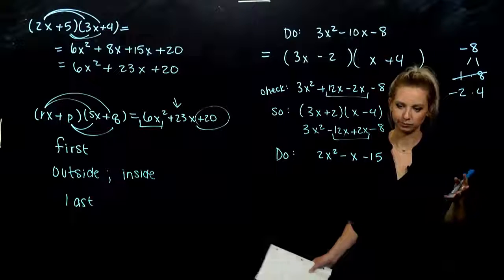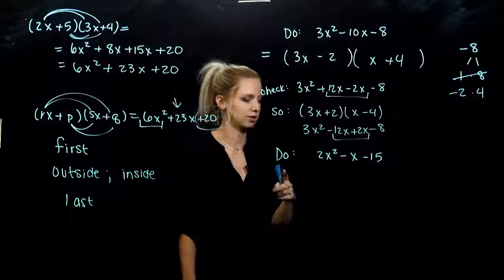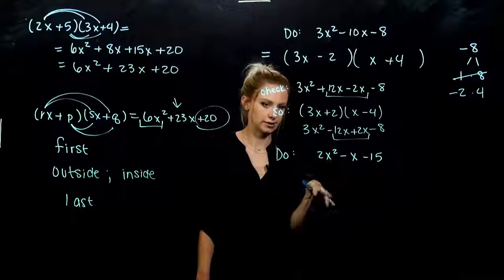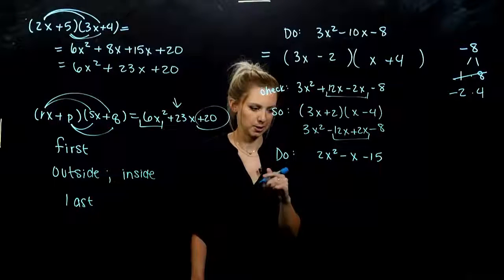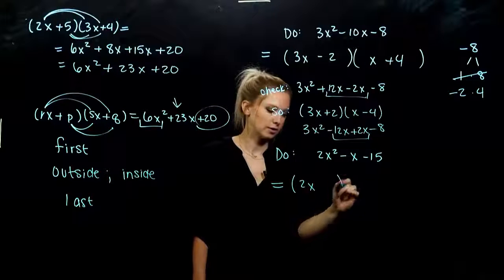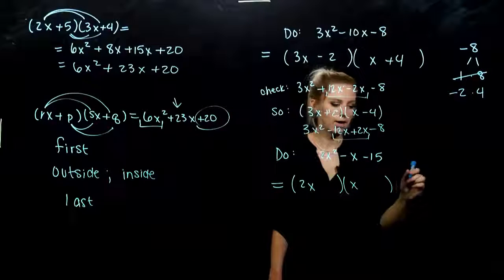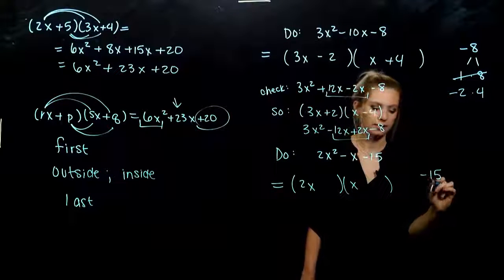Pain. But what can you do? We'll try another one just to show you that it does work with the guessing and checking. It's just time consuming. So down here, 2 is prime. So I know I'm going to need a 2x and an x. And I need to break up negative 15 into factors.